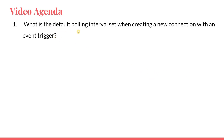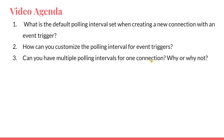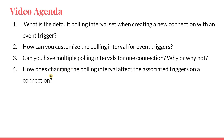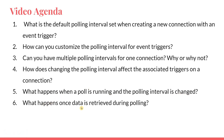After that, I have prepared a few questions. For example, what is the default polling interval set when creating a new connection? In an event trigger, how can you customize the polling interval for event triggers? Can you have multiple polling intervals for one connection? Why or why not? How does changing the polling interval affect the associated triggers on a connection? What happens when a poll is running and the polling interval is changed? What happens once data is retrieved during polling? All of these question answers you will get once we go through the documentation.